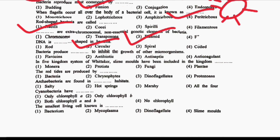Next question: bacteria produce DASH to inhibit the growth of other microorganisms. Option 1: Flavicine. Option 2: Antibiotics. Option 3: Antiseptic. Option 4: Anticoagulant. The correct answer is Option 2, Antibiotics. Bacteria produce antibiotics — the first antibiotic discovered was Penicillin, from Penicillium, which is a fungus.